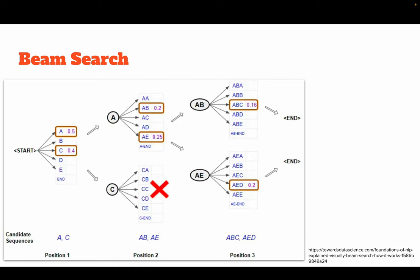One likely reason language models hallucinate is the way language is generated — words are predicted token by token. One algorithm used is beam search. In greedy search, as shown in this figure, we have different probabilities for different tokens, like 0.5 for 'a' and 0.4 for 'c'. Greedy search simply selects the highest probability token at each step. In beam search, we can have selective probabilities with a beam width of size k — if k is 2, we select the top 2 words with high probabilities, then the next top 2 for those sequences, and select the one with the highest joint probability.